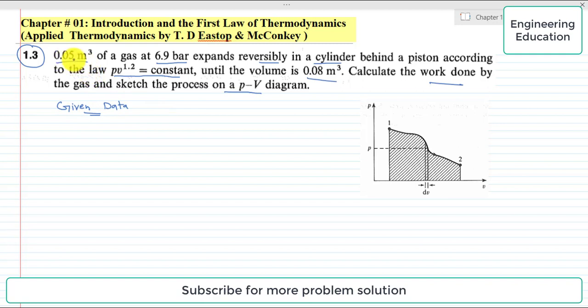Volume is given, that is 0.05 cubic meter initially. We assume that we have unit mass of gas, so the volume will become specific volume and will be represented by small v. For the initial state before expansion, v1 will be equal to 0.05 cubic meter per kilogram. Similarly, pressure P1 is given, that is 6.9 bar, or we can also write it as 6.9 × 10^5 Pascal because 1 bar equals 10^5 Pascal.